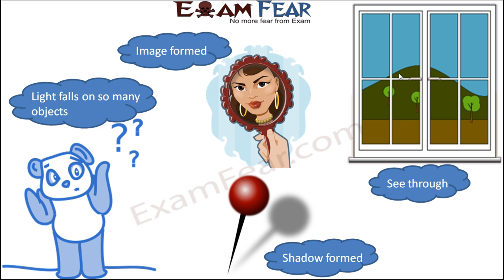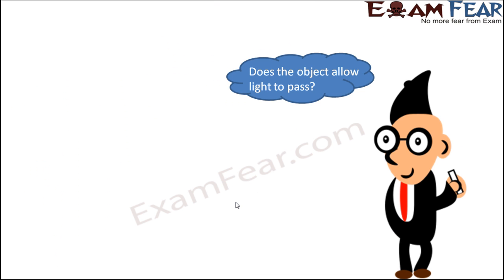So you see, in the presence of light, different objects behave differently. In some objects, an image is formed. In some objects, you are able to see the objects which are present on the other side. Whereas in case of certain objects, a shadow is formed. This creates a lot of curiosity — what is happening differently, because of which, when light falls on different objects, the behavior is different? So based on whether an object will allow light to pass through it or not, objects have been classified into three types.